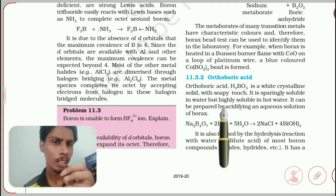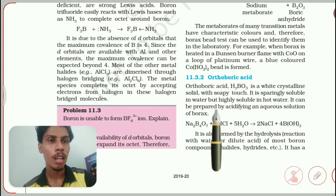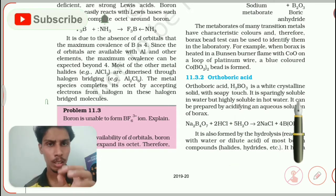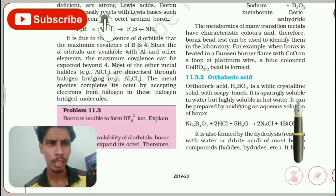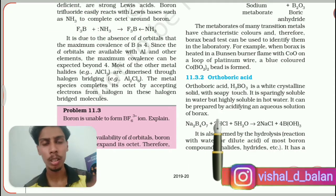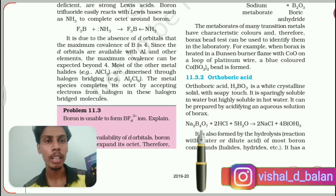Orthoboric acid can be prepared by acidifying an aqueous solution of borax: Na₂B₄O₇ + 2HCl + H₂O → H₃BO₃. I want to ask an interesting question: how many of you can draw the structure of H₃BO₃ without looking anything up? Also, how many of you can draw the structure of B(OH)₃? Both are the same molecule. Note that its structure is also formed by hydrogen bonding — hydrogen bonding is a very important and interesting topic; search about it if you are interested.